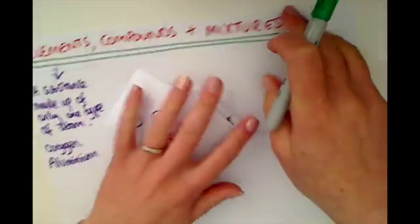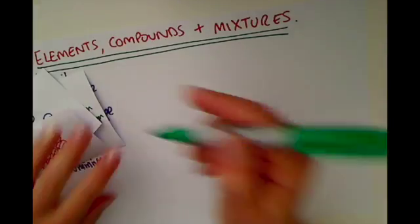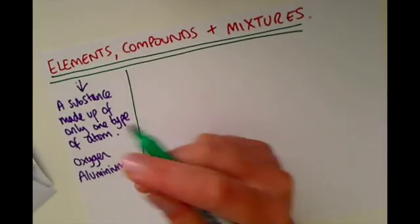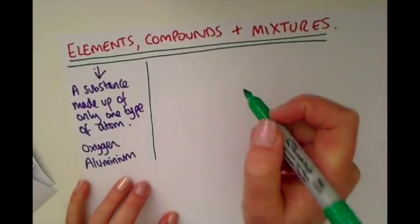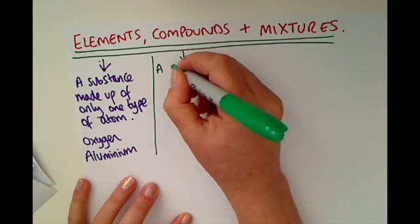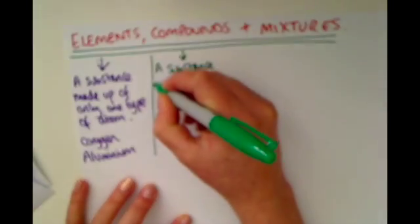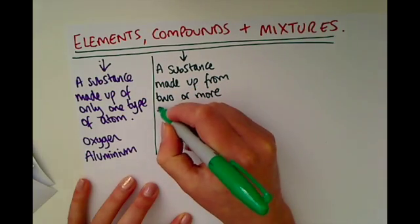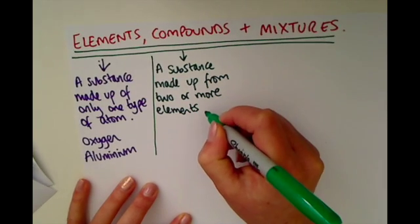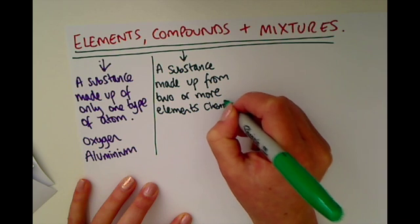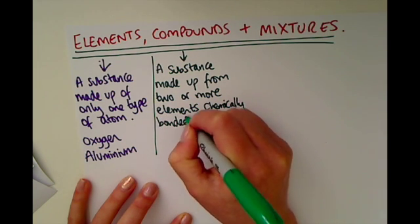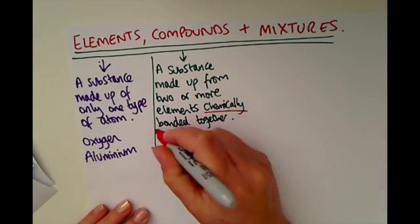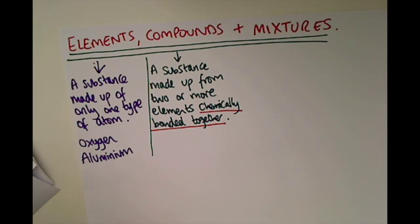Moving on to compounds. Compounds are a little bit different. Compounds are substances made up of more than one type of atom and they are bonded together. So a compound is a substance made up from two or more elements or types of atoms, and they are chemically bonded together — that's the scientific term for meaning they're joined together.